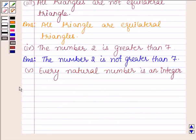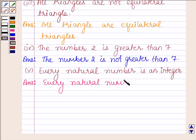Moving on to the last part, which says, every natural number is an integer. The negation of this statement will be, every natural number is not an integer.